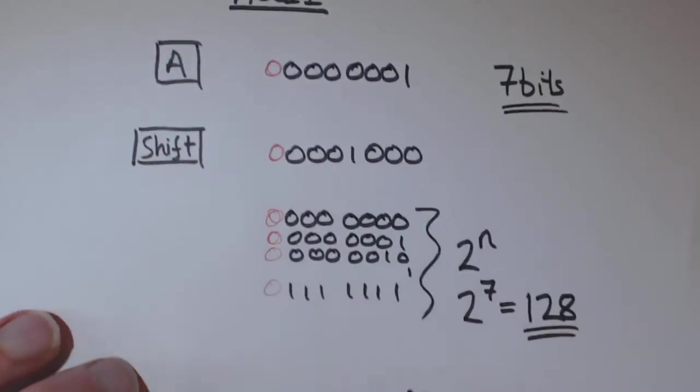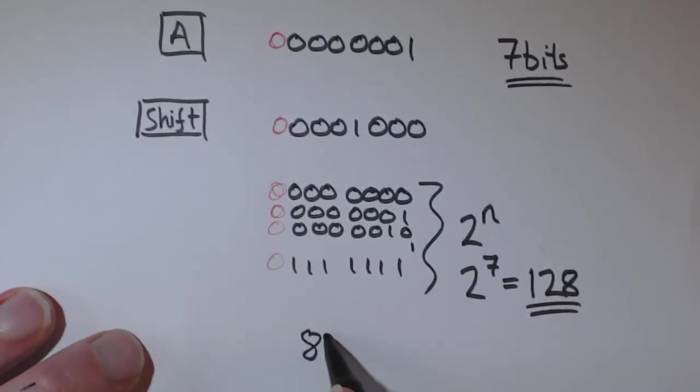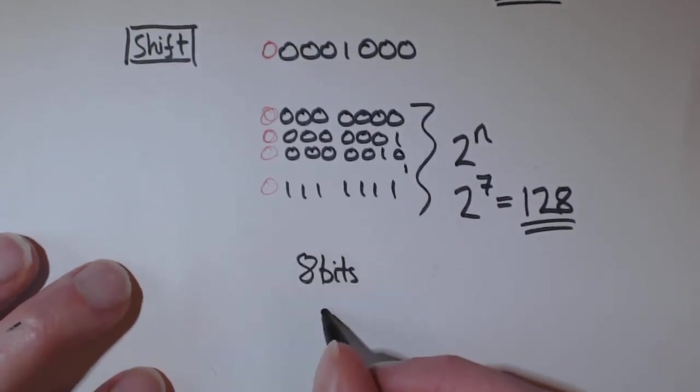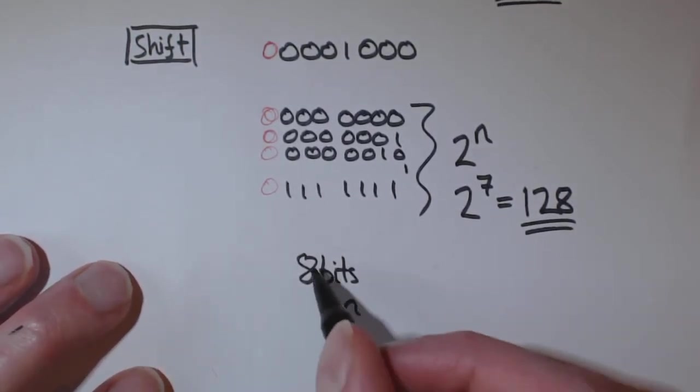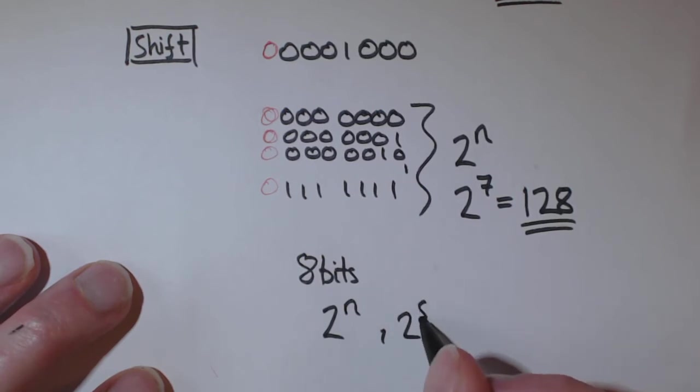If it was something with 8 bits, to find out how many characters that can store. Well, again, it's 2 to the power of n. n is 8. So it's 2 to the power of 8 equals 256.